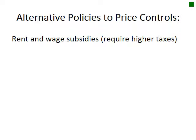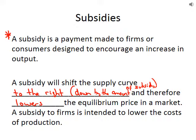Alternative policies to price controls include rent and wage subsidies, which require higher taxes but can be more favorable. A subsidy is a payment made to firms or consumers designed to encourage an increase in output. A subsidy will shift the supply curve to the right — technically shifting it down by the amount of the subsidy — and therefore lowers the equilibrium price in a market. A subsidy to firms is intended to lower the costs of production.